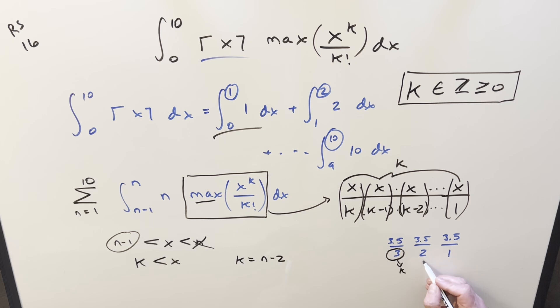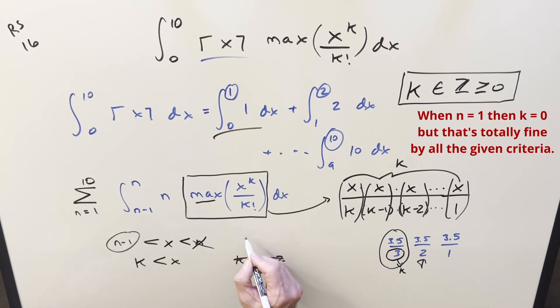That would be like if we stopped right here. The problem with choosing this value is it's not going to be the max, because here we were able to increase it. So this wouldn't be the max value. So it turns out the value we want to choose for k is going to be always n minus 1. That's going to be for every single one of these integrals. This is going to be what we want for k.